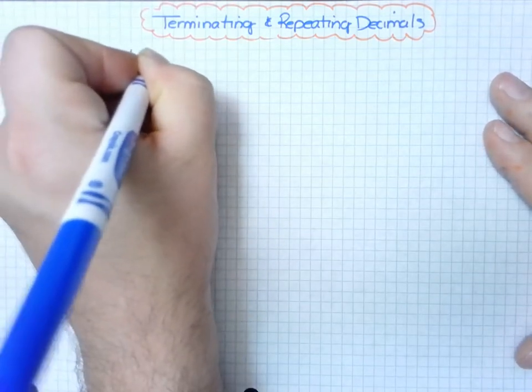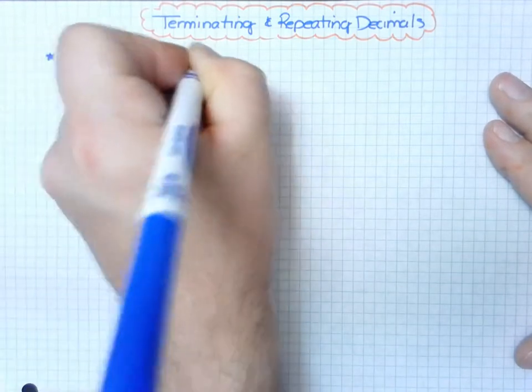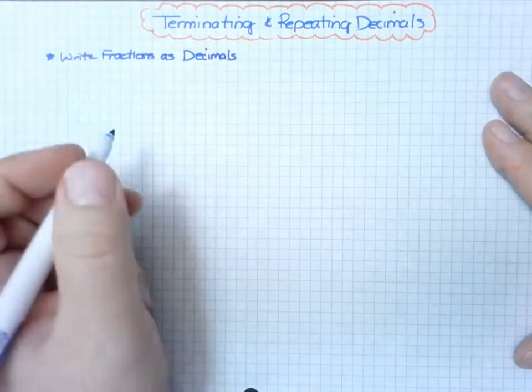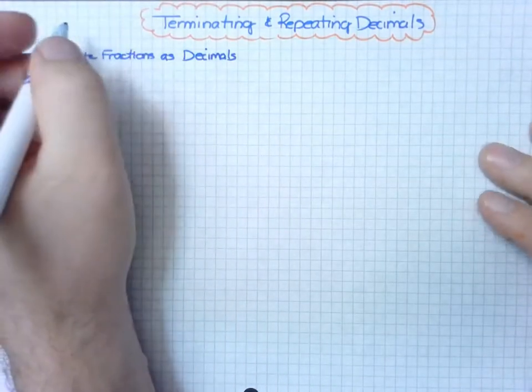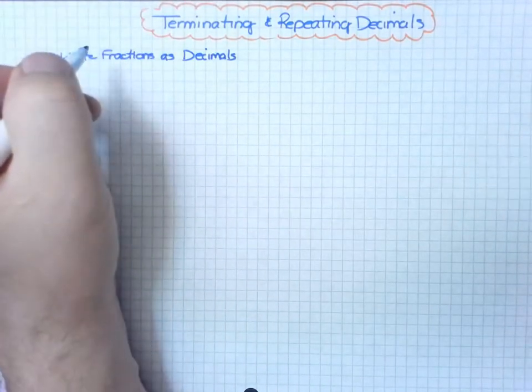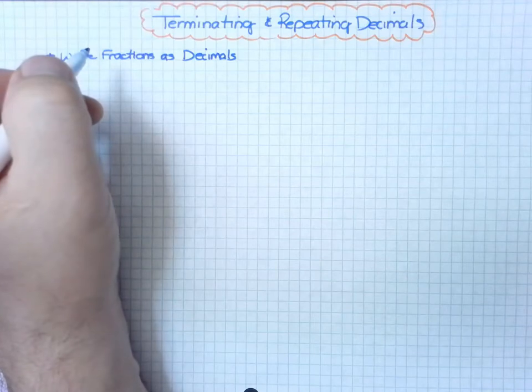Write fractions as decimals. A key statement here is that we want to use the fraction's denominator to write an equivalent decimal.